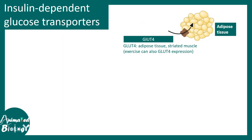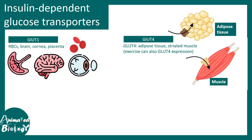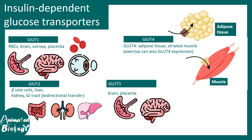Different glucose transporters are present for channeling glucose into different tissues. GLUT4 is found in adipose tissue and skeletal muscle. GLUT1 is found in placenta, brain, retina, and red blood cells. GLUT2 is found in intestine, kidney, and liver. GLUT3 is mostly found in brain and placenta. Depending on the organ type, different glucose transporters are present.